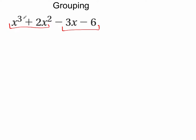So let me group my polynomial this way. When I group x cubed plus 2x squared, I see I have a common term here of x squared. So I'm going to factor x squared out, and I'm left with x plus 2.